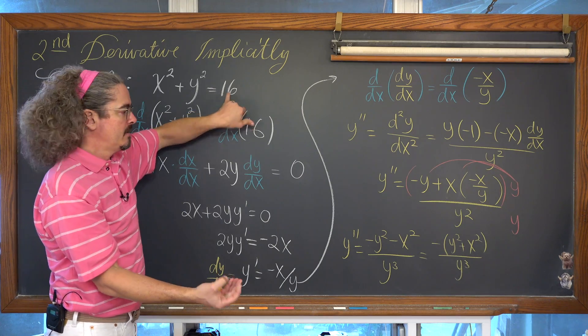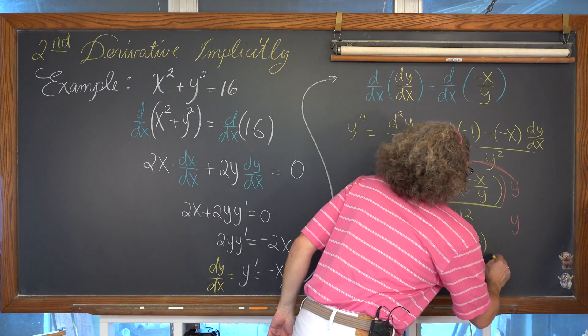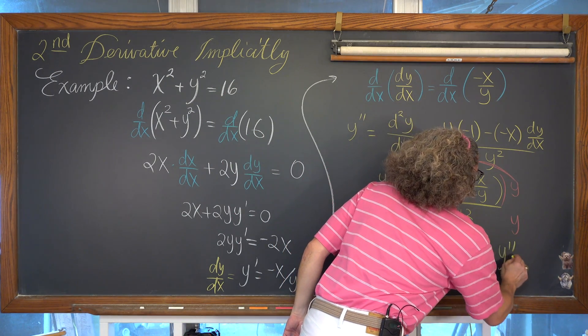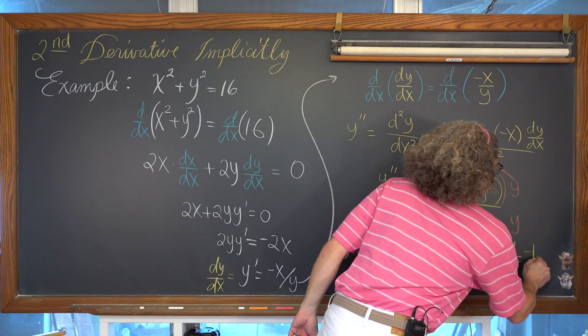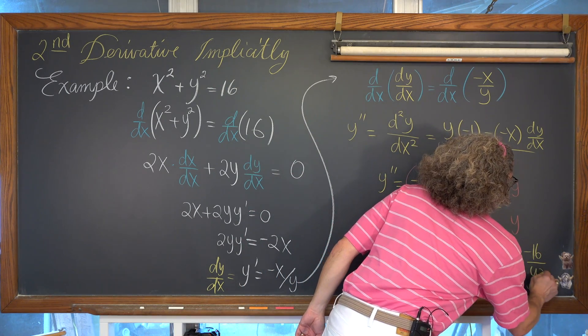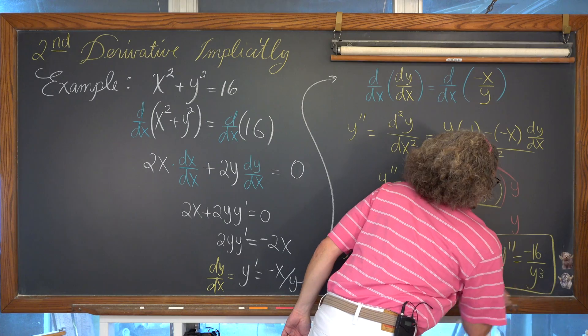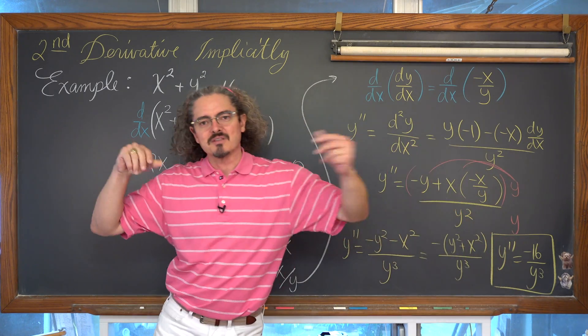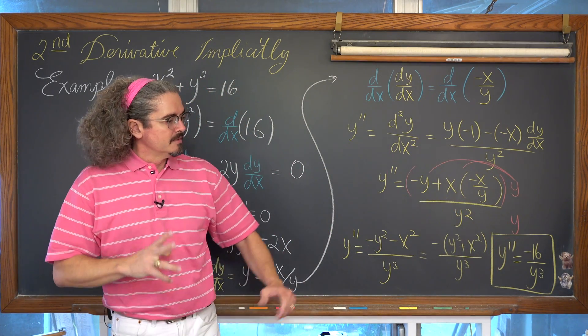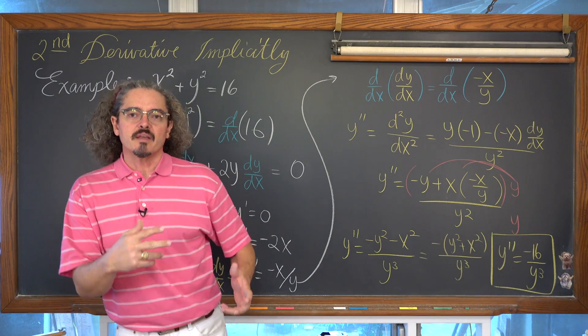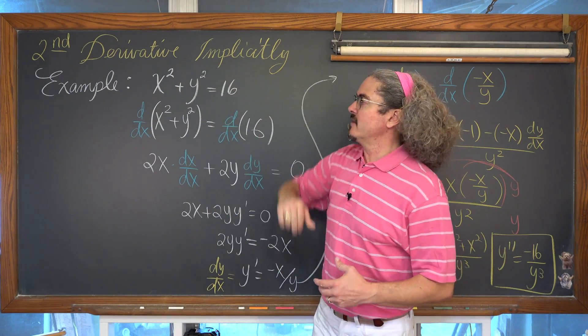We're going to take out the x squared plus y squared and replace it with 16 because that's what it was defined to be equal to in the original problem. So our second derivative, y double prime, is equal to negative 16 over y cubed, and I hope that's enough to help you answer every second derivative question in your homework that is going to be finding that second derivative implicitly.